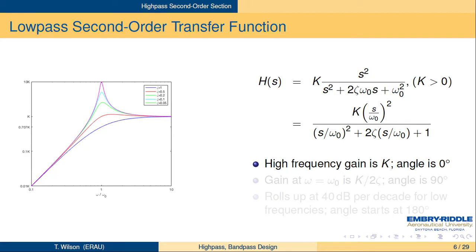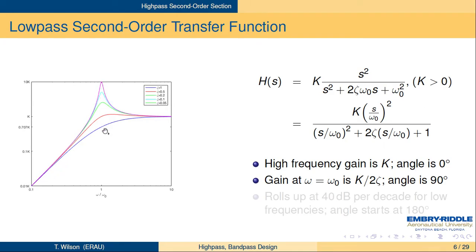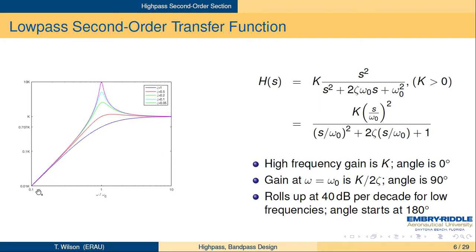The high-frequency gain is K, and the angle at that gain is 0 degrees. At ω = ω₀, the gain is K over 2ζ — there's that 1/2ζ factor from the nearness of the poles to the j-axis. At that point, the angle is 90 degrees. This starts at 0 with the double zero at S = 0 and rolls up at 40 dB per decade, with the angle starting at 180 degrees.